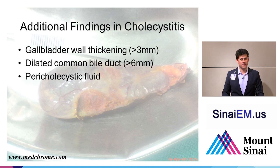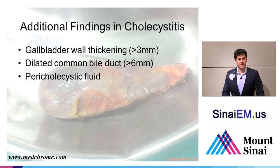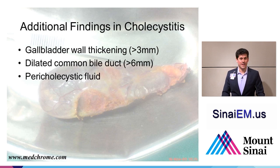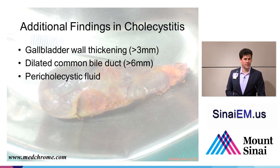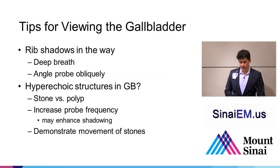What are the findings we can see in acute cholecystitis? Gallbladder wall thickening, generally defined as greater than 3 millimeters — some authors use up to 4 millimeters. A dilated common bile duct, typically greater than 6 millimeters. Most authors agree that in older patients from the 6th decade onward, you get another millimeter per decade — so 7 millimeters at age 70, 8 millimeters at age 80, and so on. And then pericholecystic fluid is another important finding to look for.